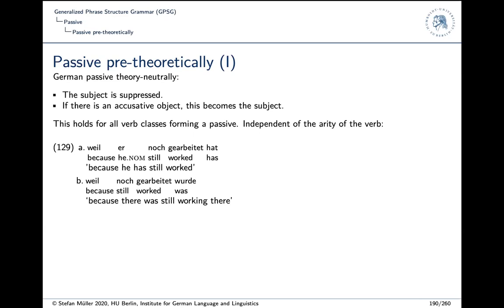In a pre-theoretical way, what we want to say is that the subject is suppressed, and if there is an accusative object, it is promoted to subject. That works for German, English, and a lot of other languages. And it doesn't have anything to do with movement — you can substitute 'nominative' for 'subject' if you prefer.